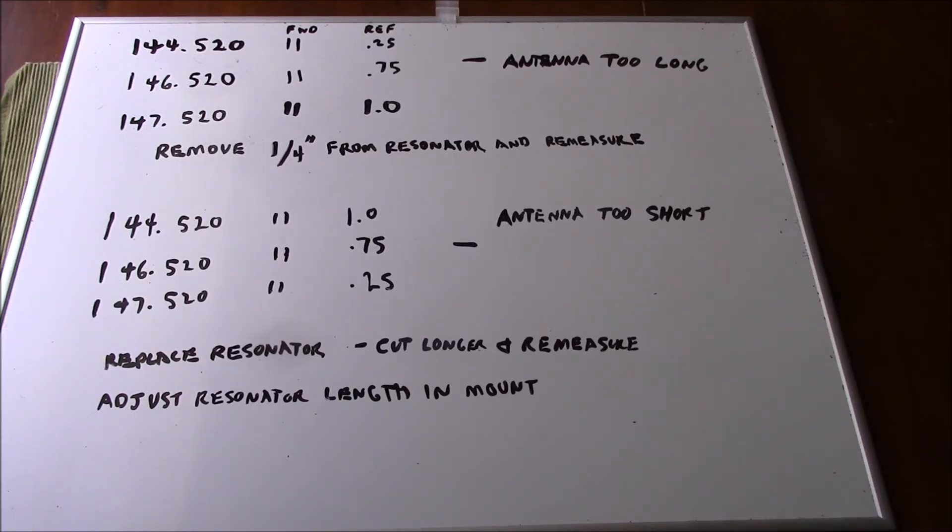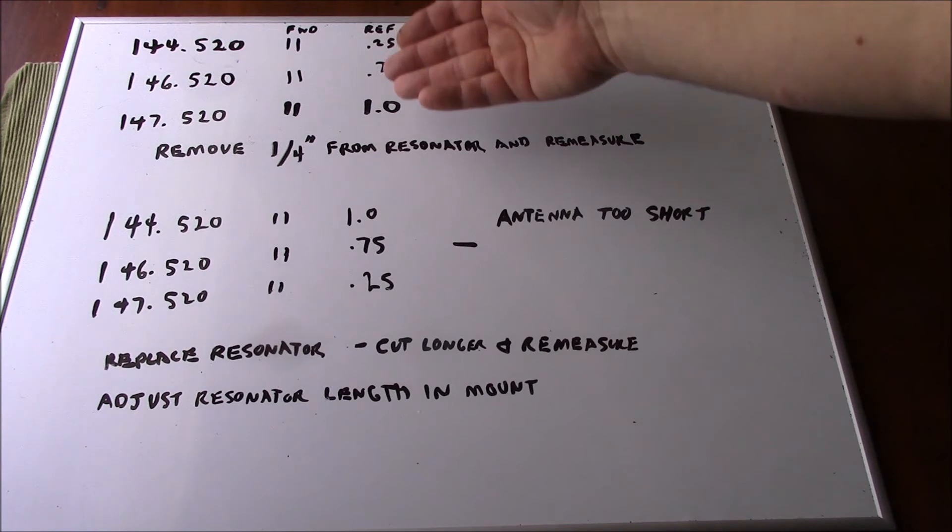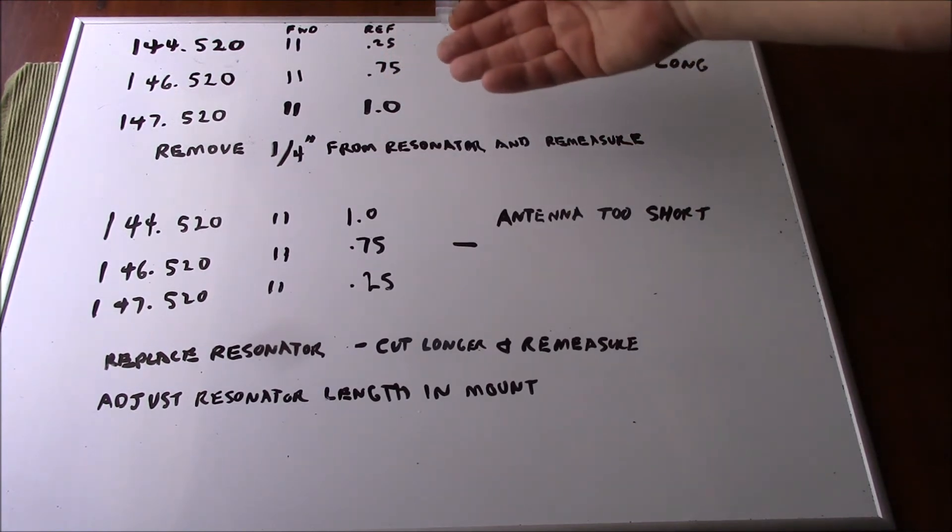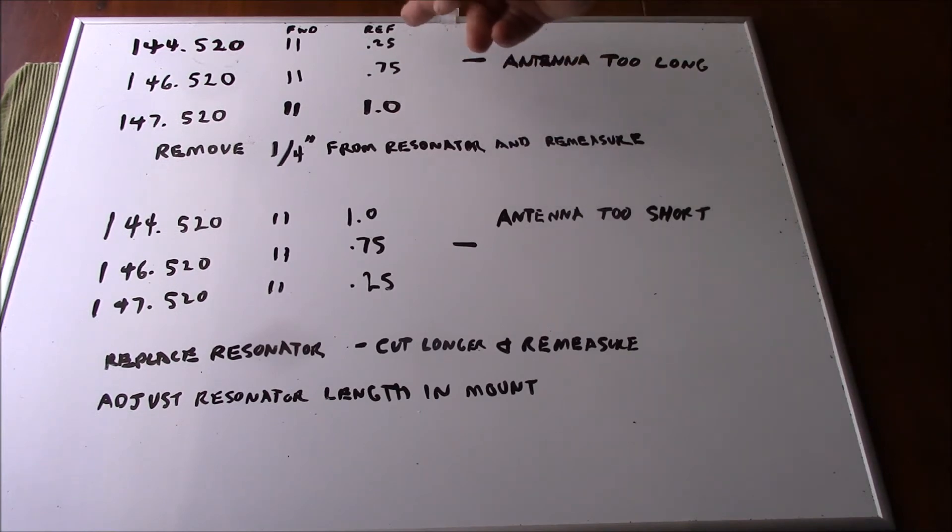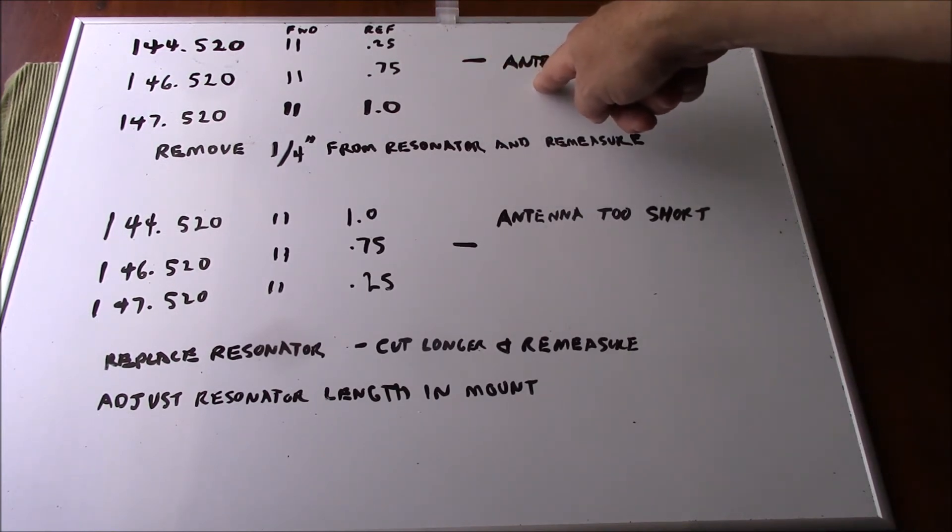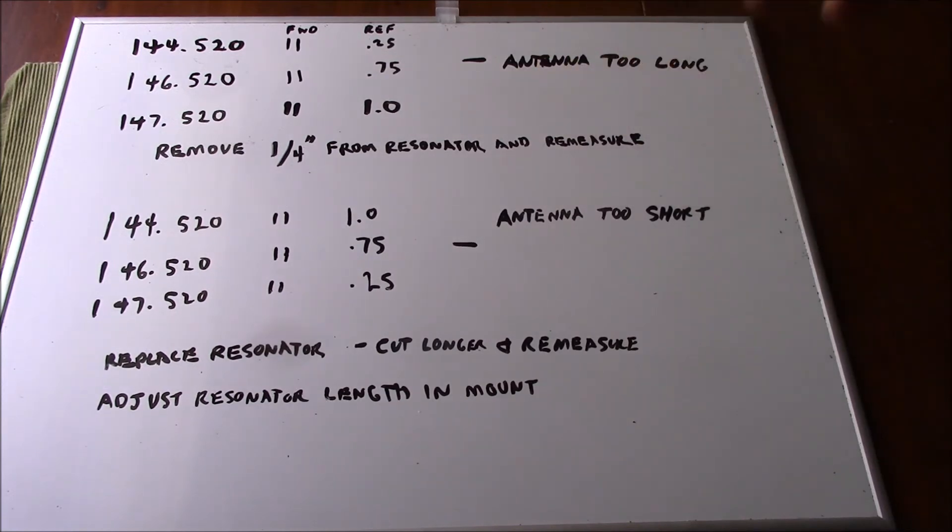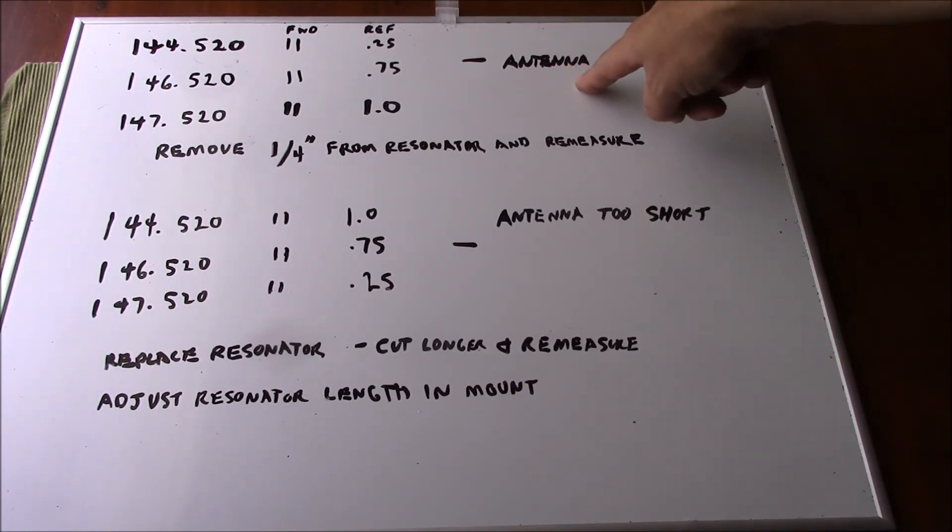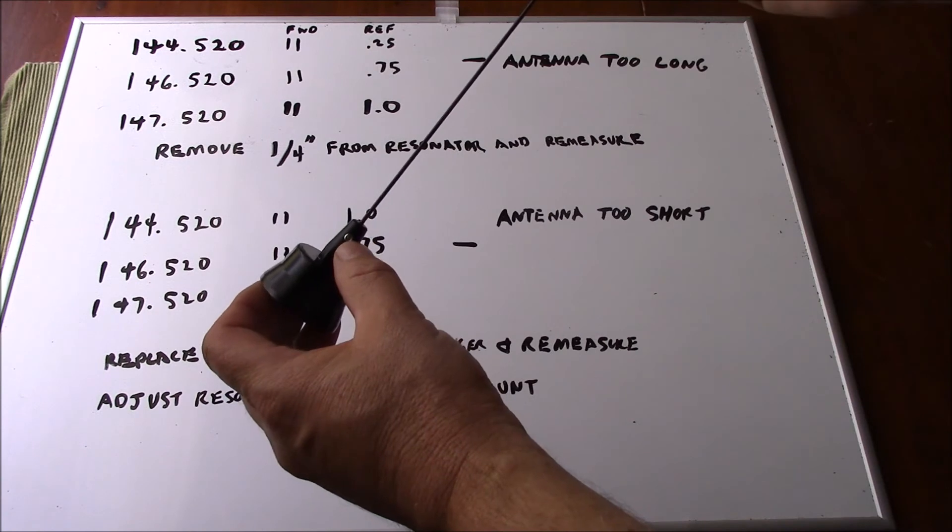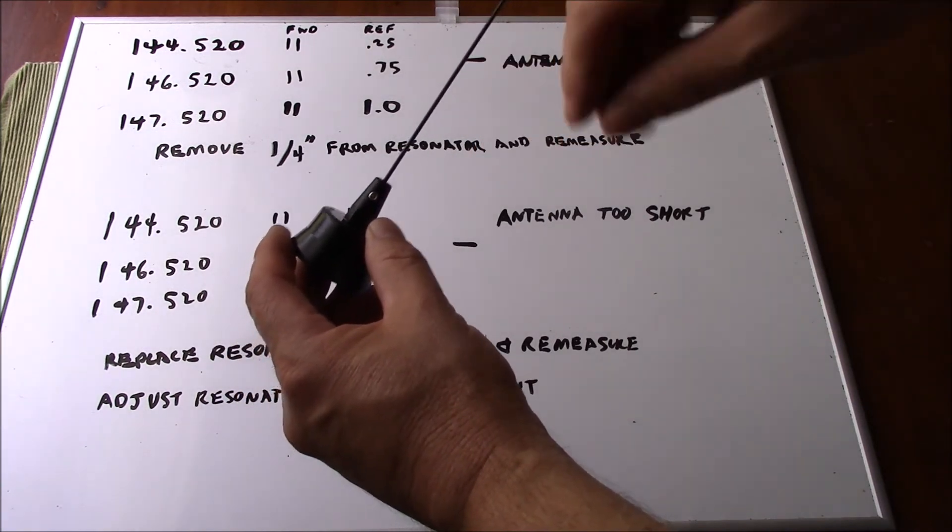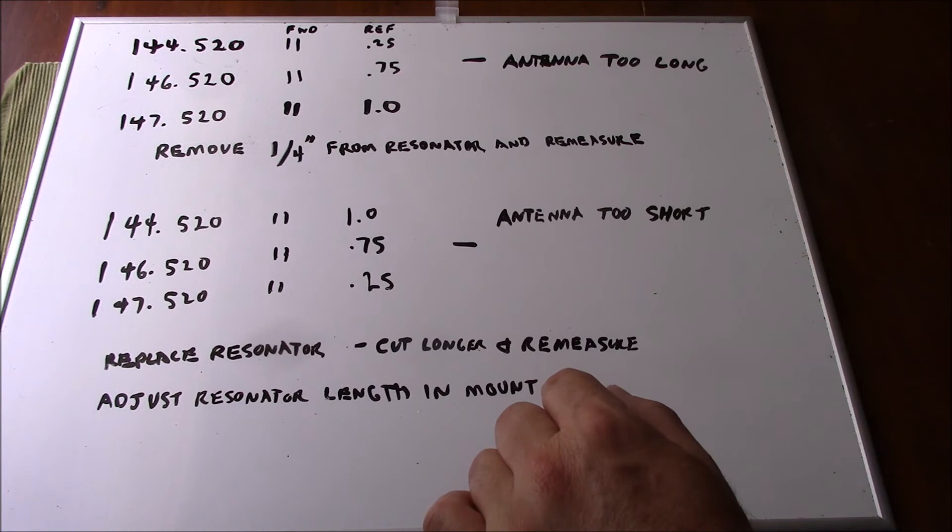Let's go through some troubleshooting here real quick. Let's say that these were our results right here. Well this would indicate that our reflected power is higher at the high end of the band rather than the low end of the band. And this indicates the antenna is too long. Because as the wavelength increases, the frequency decreases, which means a correspondingly longer antenna. So this indicates our antenna is too long. What we would do is we would go ahead and remove our resonator with the Allen screw and then we would remove a quarter inch from the resonator and then we would re-measure it again.